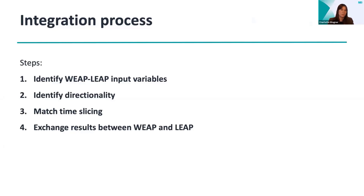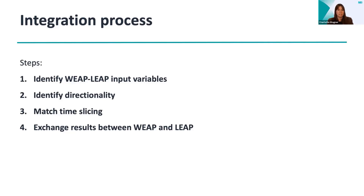First, you have to identify which WEAP and LEAP input variables you want to exchange between the two models. In the particular example I'll be talking about today, we're thinking about a hydropower plant that may have a certain capacity in LEAP, but effectively whether it runs at full capacity or not is limited by the physical system — how much water is in the reservoir and how much is available for power generation versus competing demands such as industrial uses, agricultural irrigation, or drinking water. You always want to think carefully about which variables you actually want to exchange.